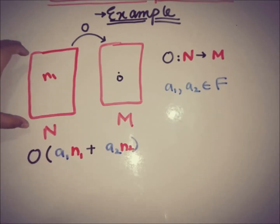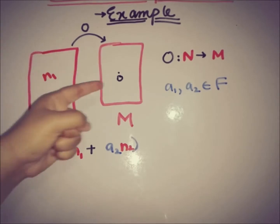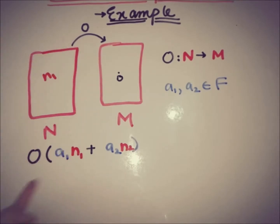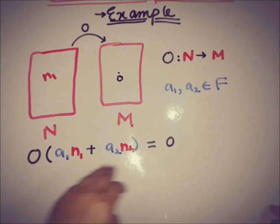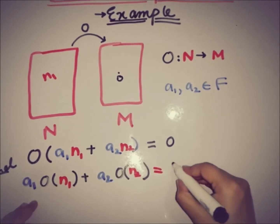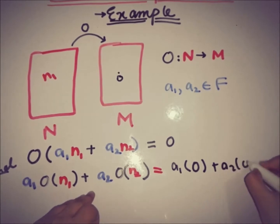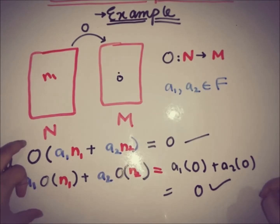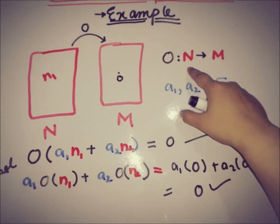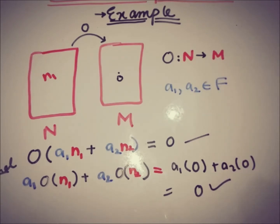Since a1·n1 + a2·n2 is also an element of N, its image under the zero operator equals zero. By definition, this equals a1 times zero plus a2 times zero, which also equals zero. So the two sides are equal, and we can say that the zero operator from N to M, from one linear topological space to another, is also a linear operator.